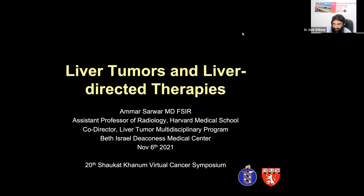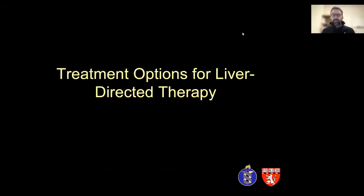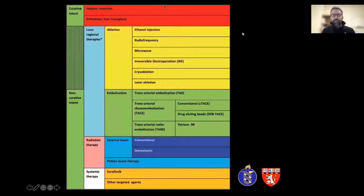Hi everybody. My name is Amar Sarwar. I'm Director of the Liver Cancer Program at Beth Israel Deaconess Medical Center. Thank you for inviting me to speak about liver tumors and liver-directed therapies. I'll provide a quick overview of current treatment options for liver-directed therapy — not surgical options such as transplantation or resection — focusing on local regional therapies including ethanol injection, RFA, microwave ablation, trans-arterial embolization, trans-arterial chemoembolization, and radioembolization.